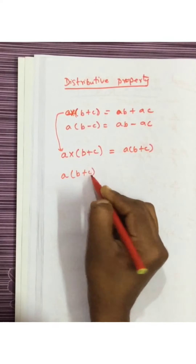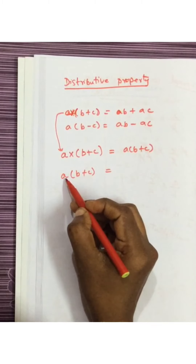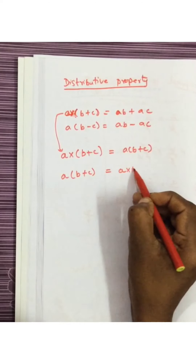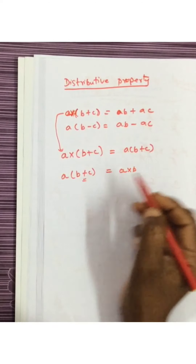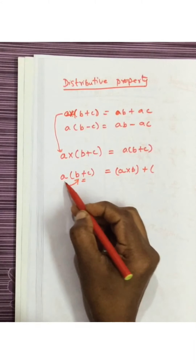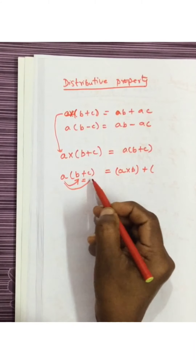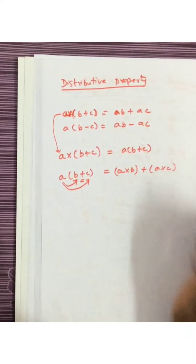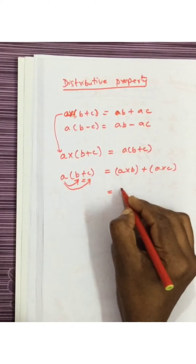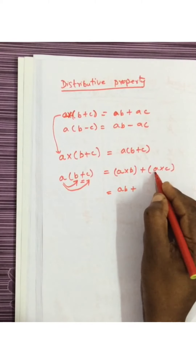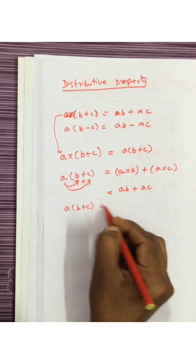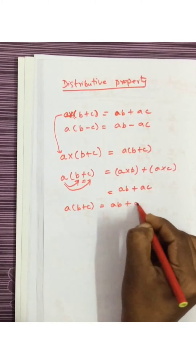So A into B plus C means A should be multiplied with B, giving A multiplied by B, and then there is a plus. First we have to multiply A with B, and again multiply A with C, plus A multiplied by C. So A multiplied by B can be written as AB, plus A multiplied by C written as AC. So A into B plus C gives AB plus AC.